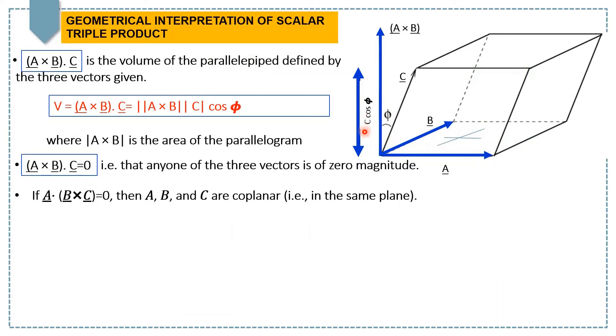The height is given by the component of the third vector C along the direction of A cross B, and that is C cos phi, where phi is the angle between A cross B vector and C vector. So the magnitude of A cross B gives the area of the parallelogram, and the direction of this vector is perpendicular to this parallelogram or base. The height is denoted by C cos phi.